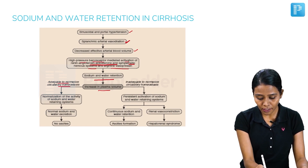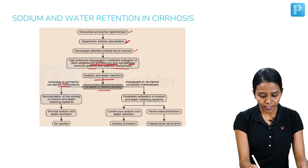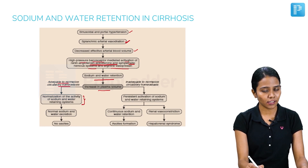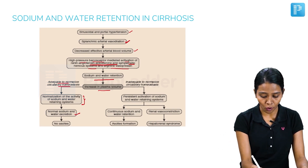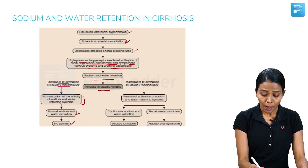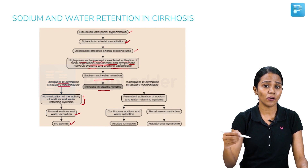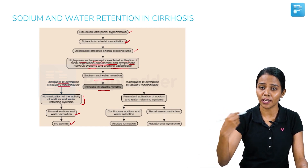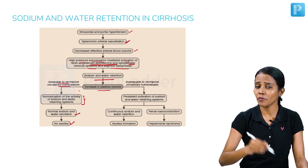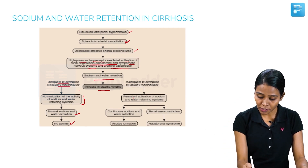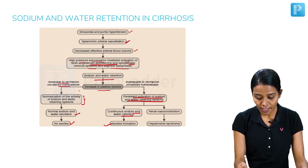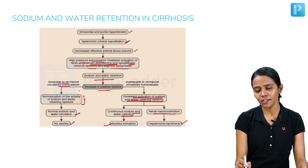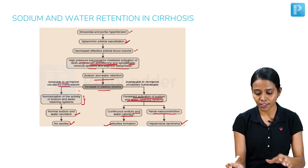If this compensation is adequate to normalize circulatory homeostasis, the renin-angiotensin-aldosterone system gets suppressed, resulting in normal sodium and water excretion and no ascites. But once this system is disrupted — because portal hypertension and splanchnic vasodilation keep effective arterial blood volume very low — there is persistent activation of sodium and water-retaining systems, causing continuous sodium and water retention leading to ascites, and renal vasoconstriction causing hepatorenal syndrome. This is the mechanism of water retention in cirrhosis.